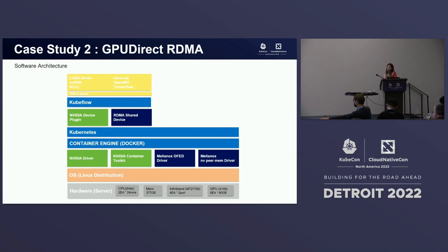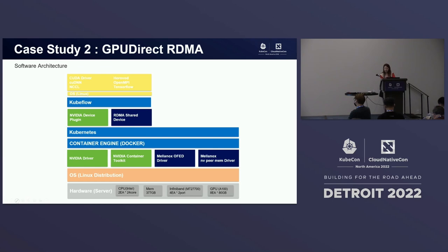When the OS layer setting is done, let's look at the Kubernetes layer. We have to set NVIDIA device plugin and RDMA shared device to the Kubernetes layer. NVIDIA device plugin is a daemon set that automatically recognizes and runs GPU in Kubernetes layer — it is mandatory for using GPU in Kubernetes. If RDMA shared device is set, allowing access between pods by sharing the RDMA device between Kubernetes nodes, then we are ready to use GPU-Direct RDMA in Kubernetes layer. The container image layer uses CUDA, cuDNN, and NCCL for our POC. Then all preparation is completed to use GPU-Direct RDMA.